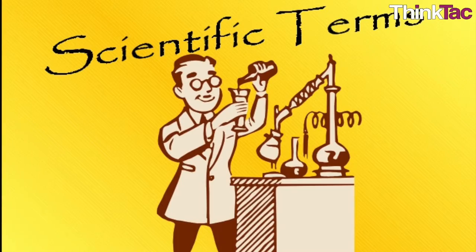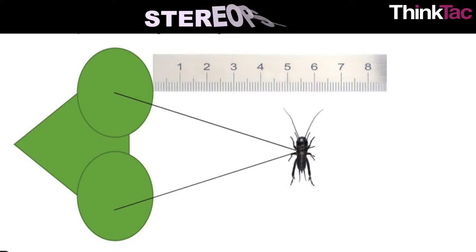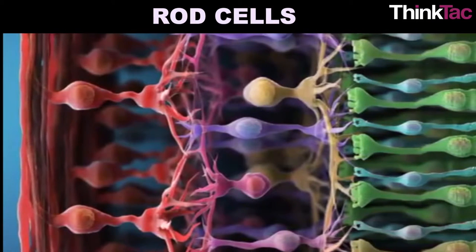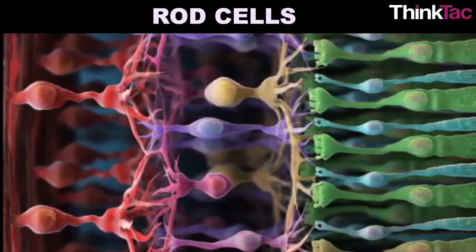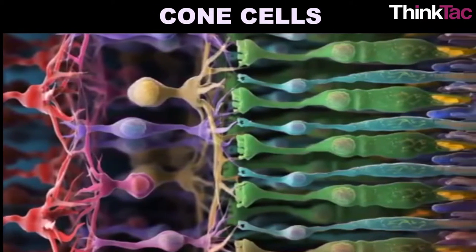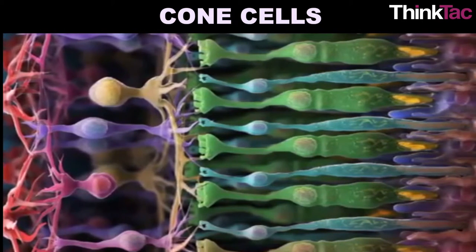Some scientific terms: A stereogram is a diagram or computer-generated image that gives a three-dimensional representation of a solid object. Stereopsis is the depth perception produced by the brain from visual stimuli from both eyes combined. Rods are photoreceptor cells in the retina which can function in low light. Cones are photoreceptor cells that make color vision possible.